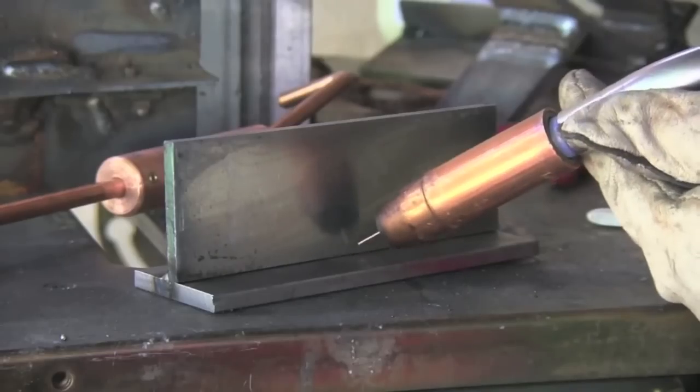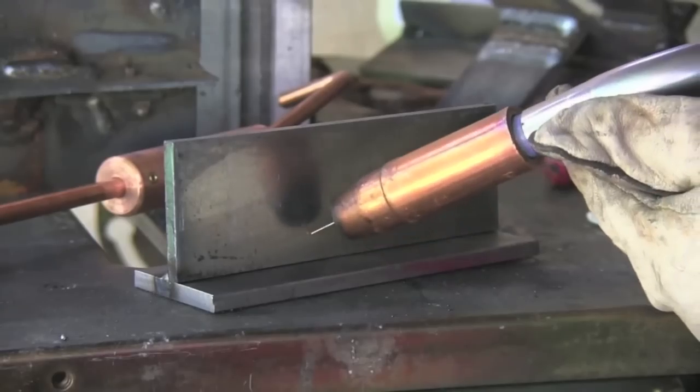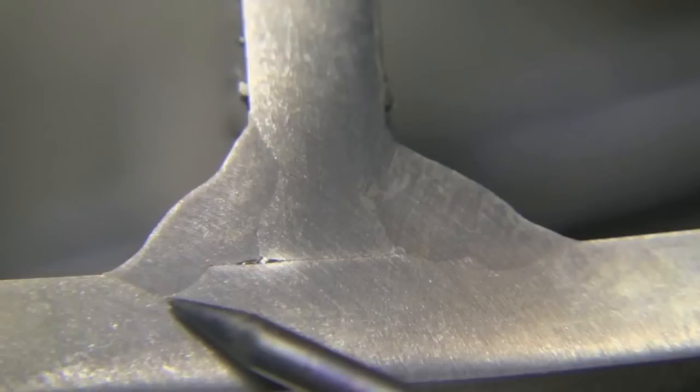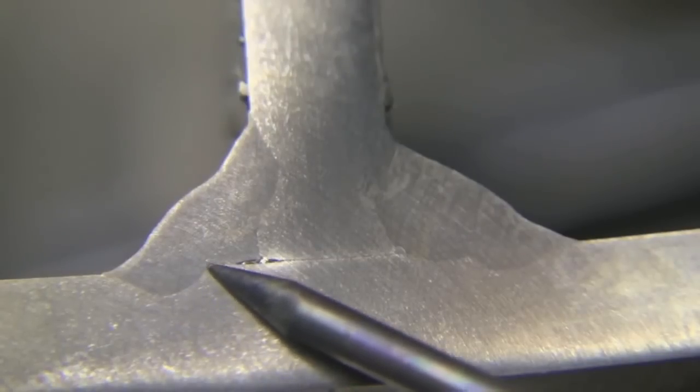So that's the first bead done there. Now, there are techniques that don't keep the arc all the way on the leading edge like this. It keeps it on the leading edge of the toes. It doesn't do anything to drive it down into the root of the joint. And then you get lack of fusion, also called LOF, or cold lap.